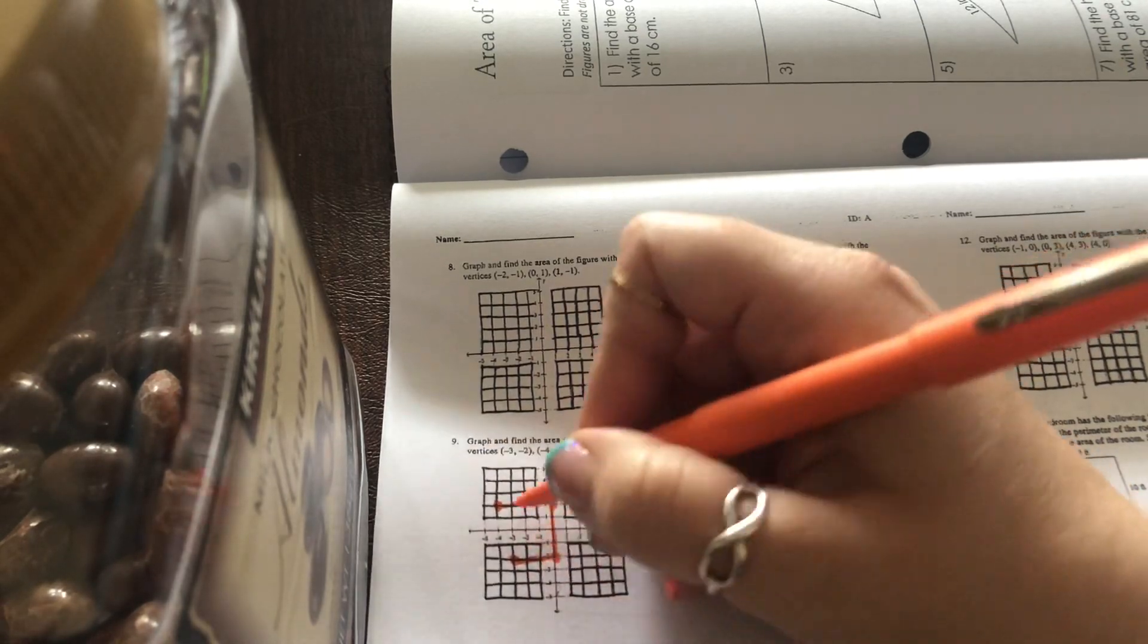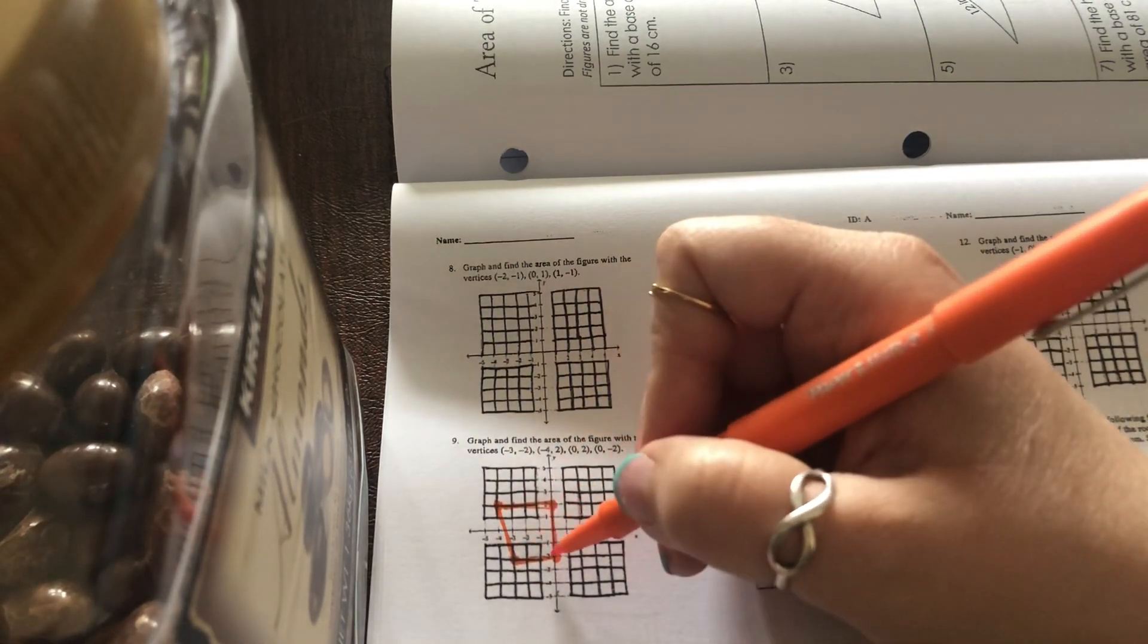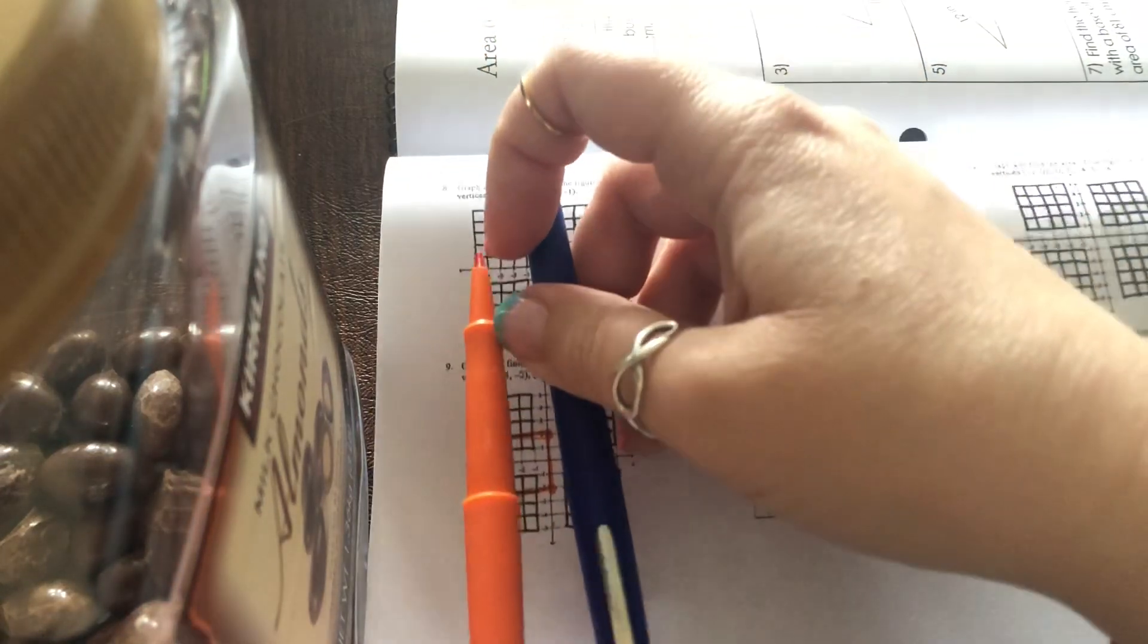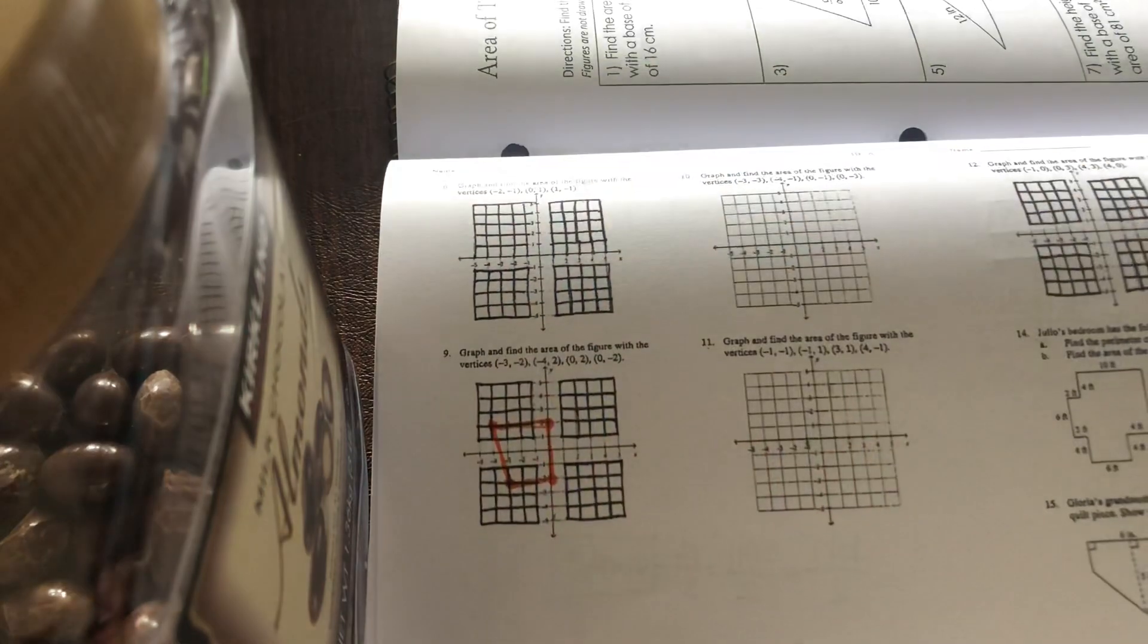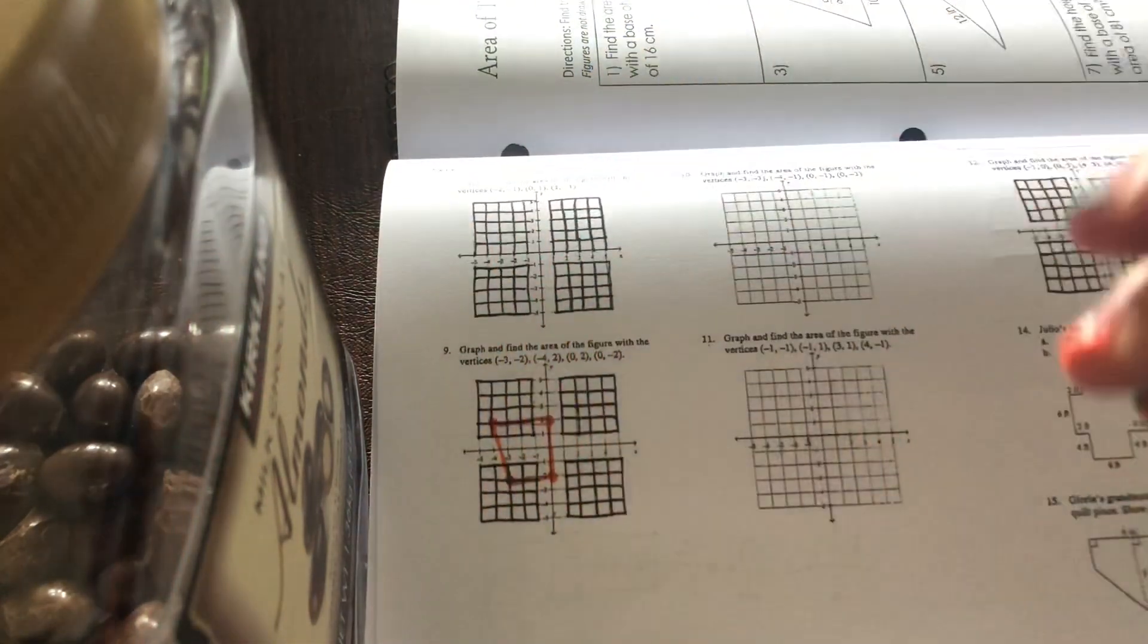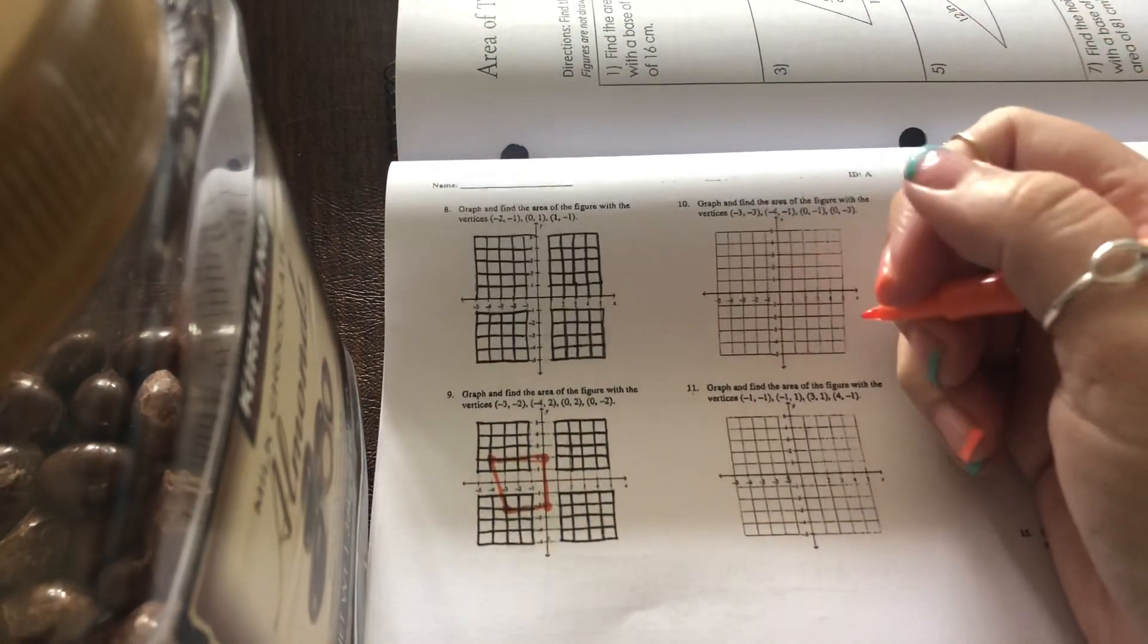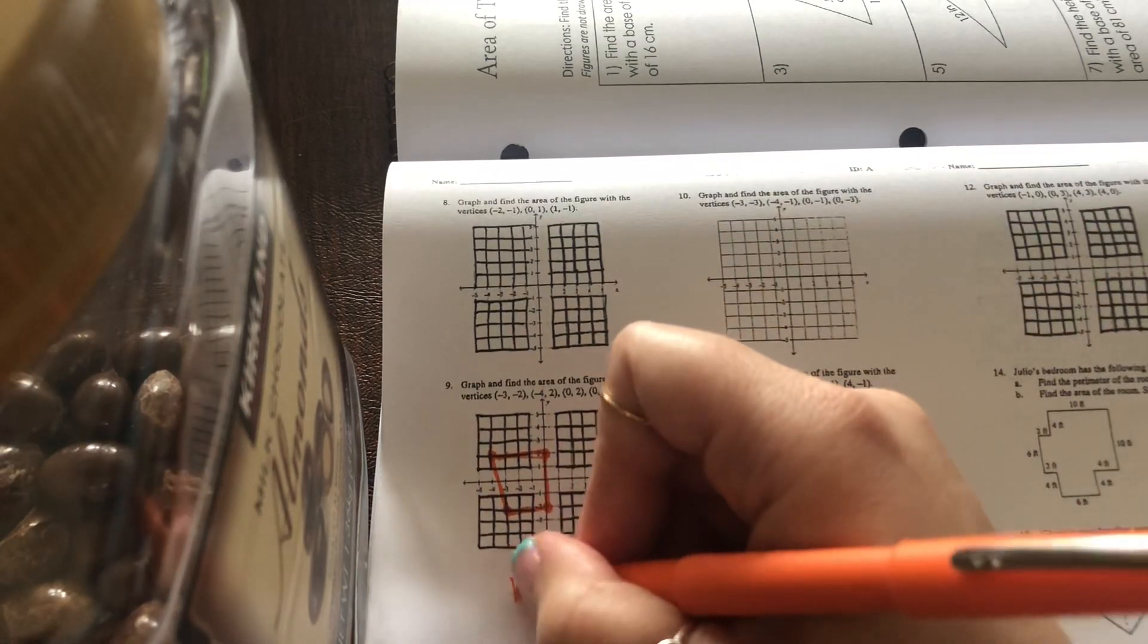And notice that this time we don't have a parallelogram because yes, these sides are parallel, but these two sides, if I were to extend them, they would eventually intersect down here at the bottom. And so since these two sides down here are going to intersect at the bottom, that means they're not parallel. So it's not a parallelogram. And when you have a four-sided figure that only one side of opposite sides are parallel, it's called a trapezoid.